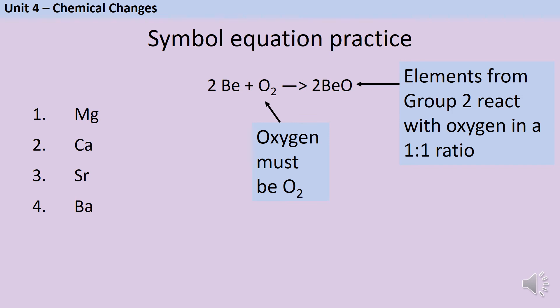Now that you have this pattern, we can do exactly the same thing for the other Group 2 elements. Pause the video and write down a symbol equation for each of these reactions. By following the same process, you should have come up with the following equations. You can see that each one takes exactly the same form as the beryllium one.